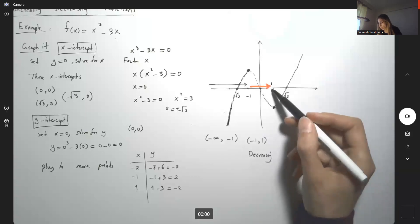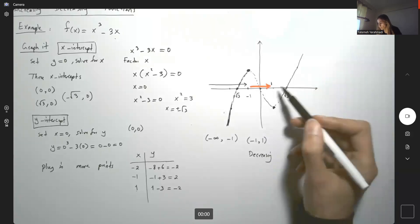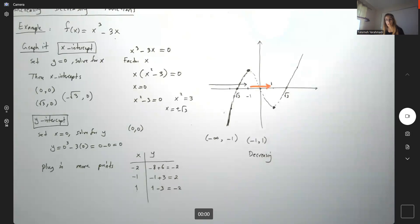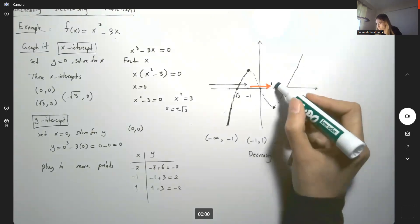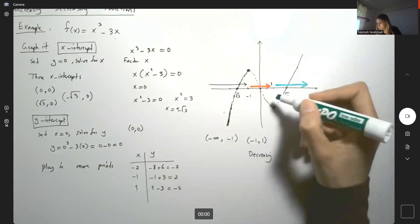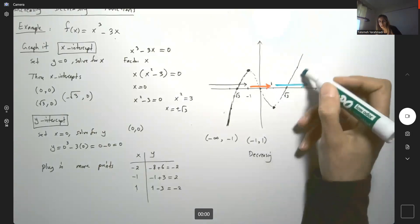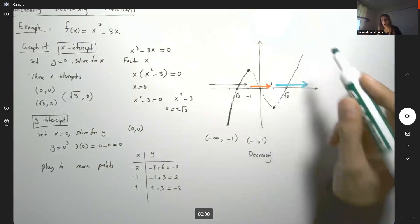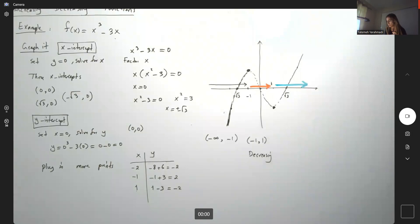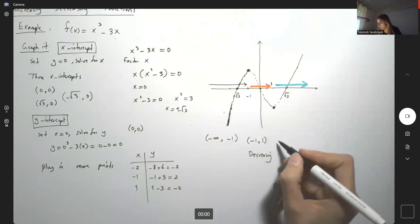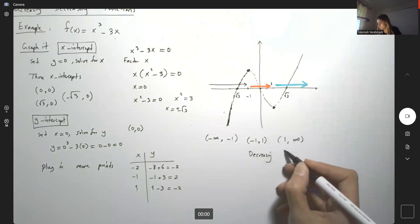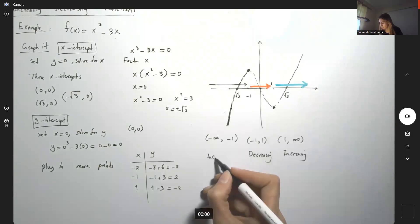From 1 to positive infinity, the y values start increasing, going up. So it's decreasing, then from 1 to positive infinity, it's increasing.